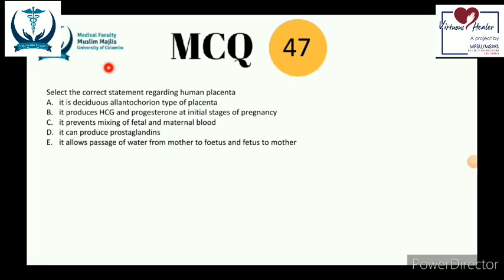The human placenta is a barrier between fetus and mother — unique as the only organ made of tissue from two different organisms (maternal and fetal tissue). It is a deciduous allantochorean type of placenta — deciduous because it ruptures and tears during parturition. The allantochorean membrane forms when the allantois and chorion layers fuse.